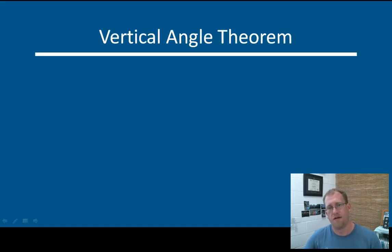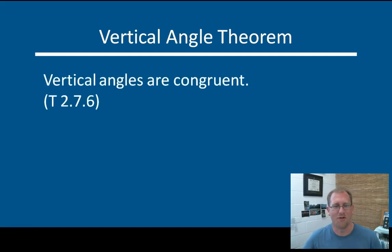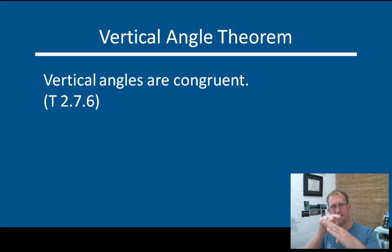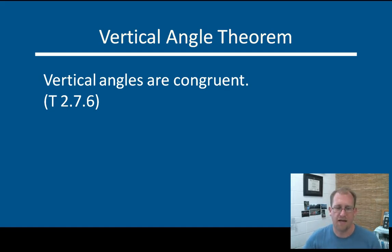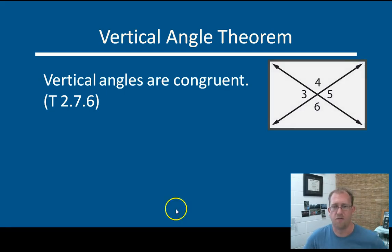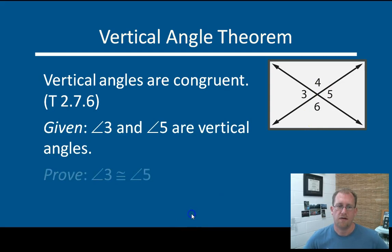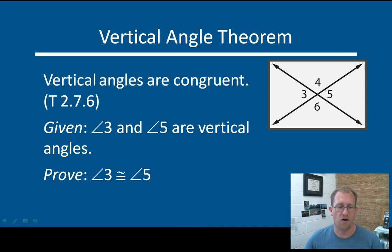You've got a couple more theorems here. The vertical angle theorem: vertical angles are always congruent. You have a straight line and a straight line that intersect — these opposite angles that they form have to be the same. Unless the line is bendy, in which case it's not a line. Three and five must be congruent; four and six must be congruent. Vertical angle pairs are always congruent. Let's prove that. Given that they're vertical, prove that they're congruent.